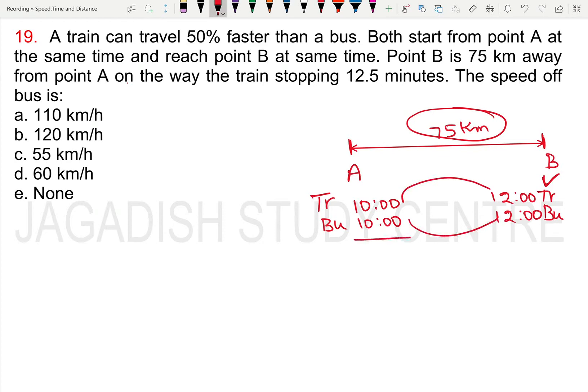The train can travel 50% faster than a bus.